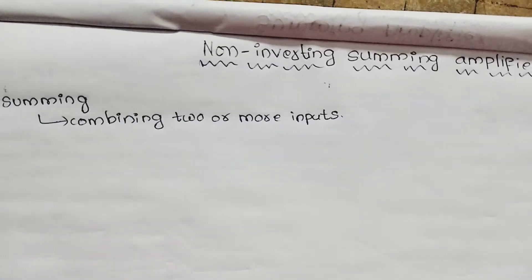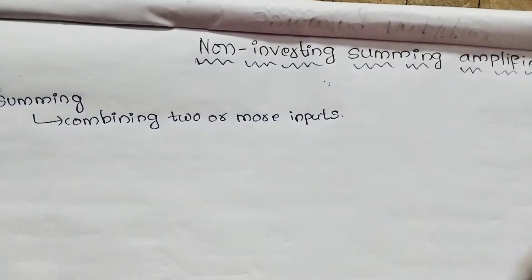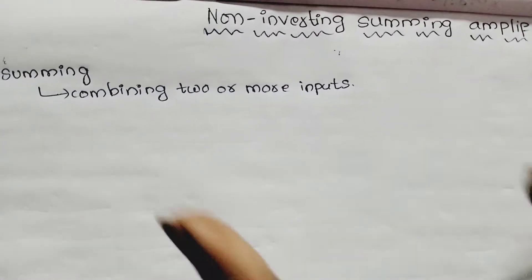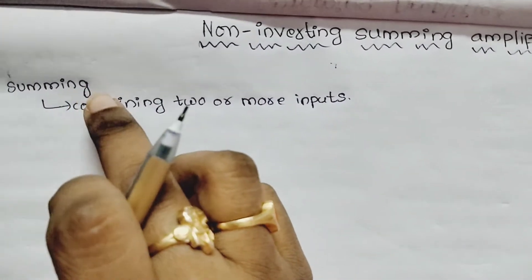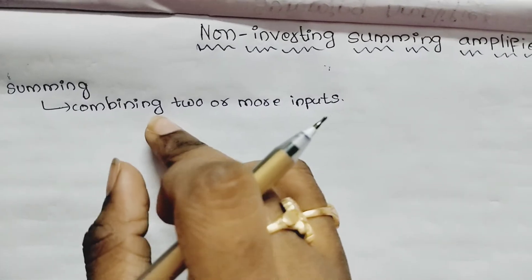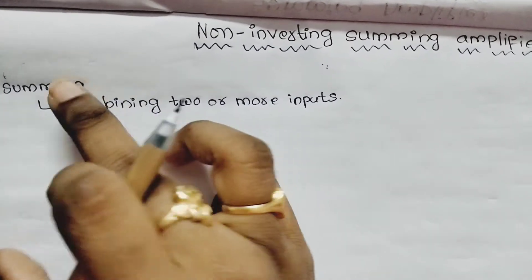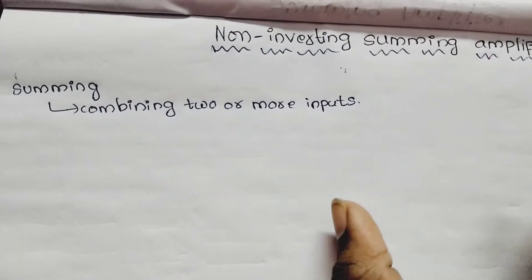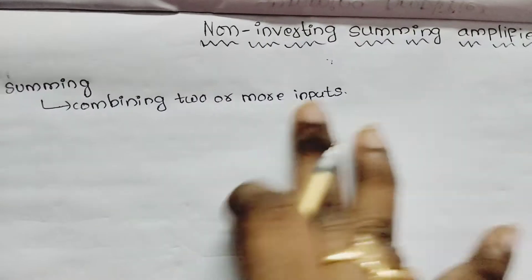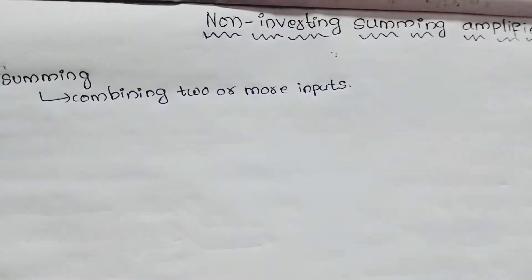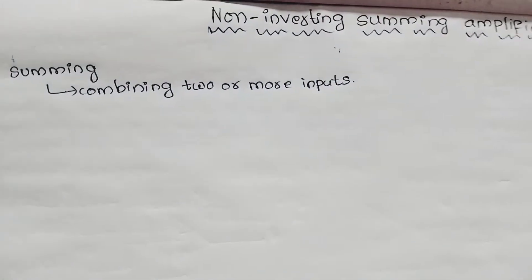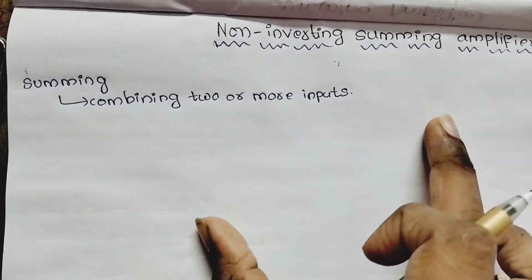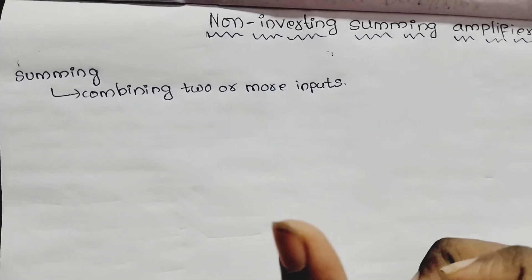As I said, we already chose summing. Summing means combining two or more inputs. So we will now work on the non-inverting pin and go for the circuit diagram.